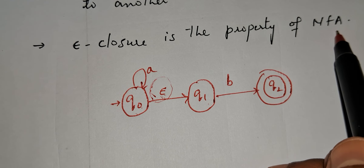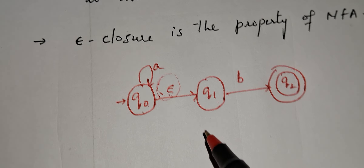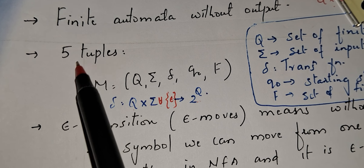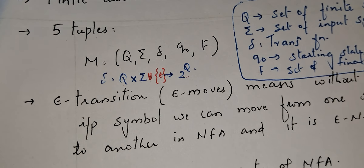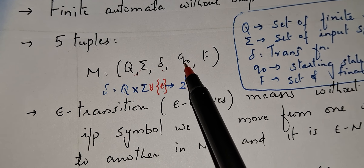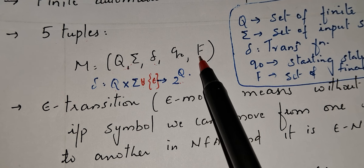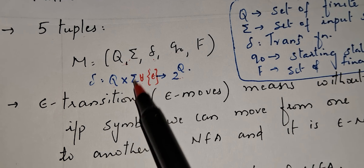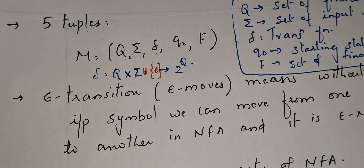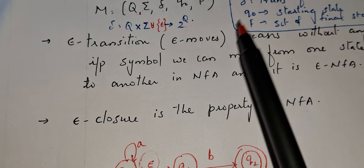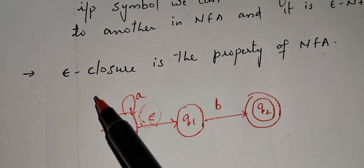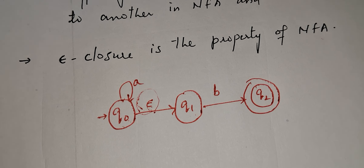Epsilon closure is a property of epsilon NFA. In epsilon NFA you need to find the epsilon closure of states. To recap: epsilon NFA belongs to the category finite automata without output, like DFA and NFA. It consists of five tuples — Q, Sigma, delta, q0, and F. The change in the transition function is that epsilon moves are added along with the input symbol: Q cross (Sigma union epsilon) gives 2 power Q.